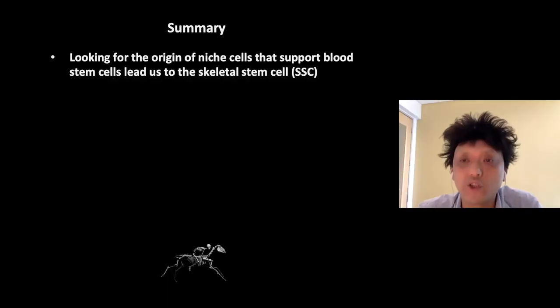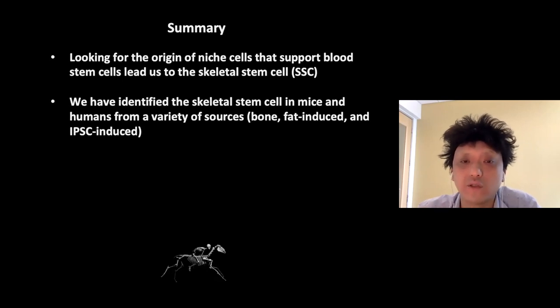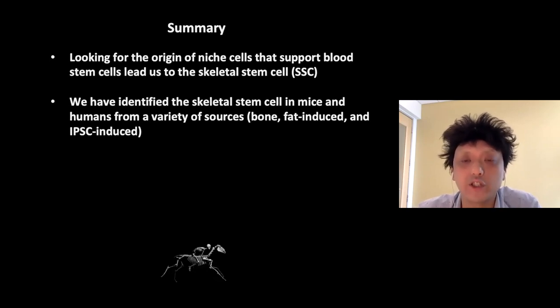In summary, we have been able to identify skeletal stem cells by asking a basic question that doesn't directly involve skeletal stem cells — we were trying to ask what is the origin of the niche cells, the supportive cells that nourish the blood-forming stem cells. By probing this question, we eventually identified skeletal stem cells, which in mice and humans can form bone, cartilage, and fibroblastic stromal tissues.